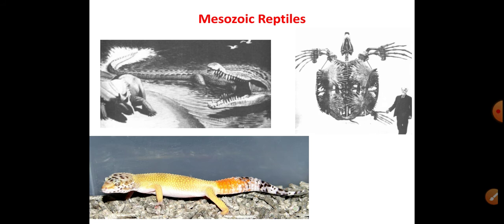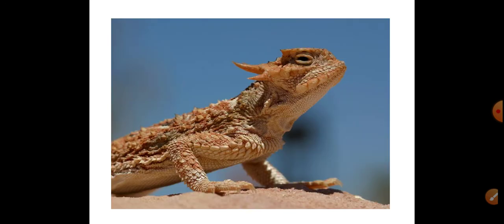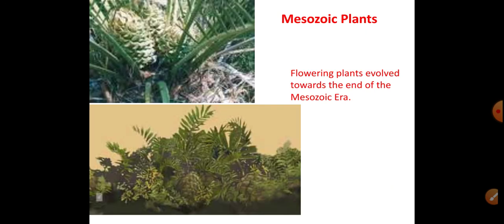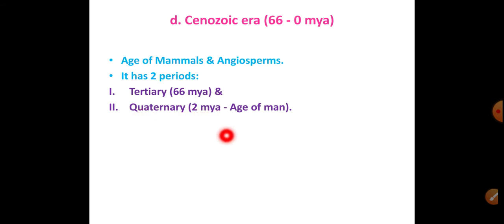Following the extinction, some mesozoic animals survived, including shrew-like mammals. The Cenozoic era is from 66 million years ago to the present. Mammals are animals which feed their young ones through mammary glands. The Cenozoic era has two periods: the Tertiary period (66 MYA) and the Quaternary period (2 MYA to present). The Quaternary period is called the 'Age of Man.' Even dinosaurs suddenly disappeared during this transition.